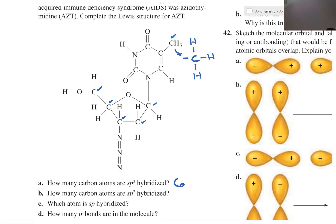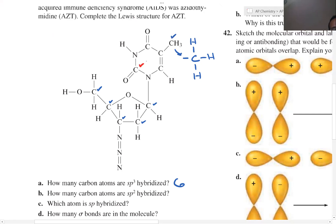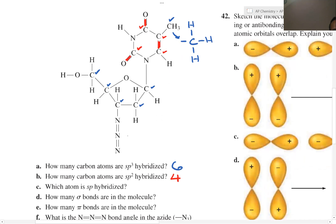How many are SP2 hybridized? SP2 means the shape is trigonal planar. In this case, counting: carbon one, two, three, and four — remember, double bonds are treated as one. And which atom is SP hybridized? You're looking for linear shape. As a result, this would be linear — so that would be the nitrogen.